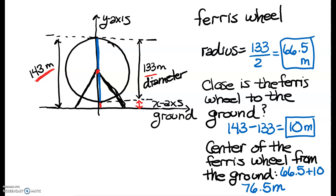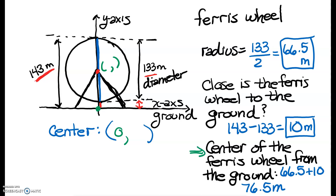So what are the coordinates of the center? If this is my origin, I have gone no distance left or right — only upward. That distance is 76.5 meters, the distance from the center to the ground calculated in the previous question. So the coordinates of my center are (0, 76.5), which means h = 0 and k = 76.5. Knowing h, k, and our radius, we can create the equation of our ferris wheel.